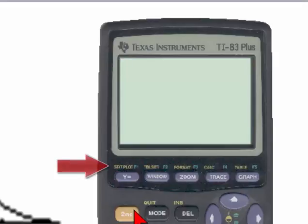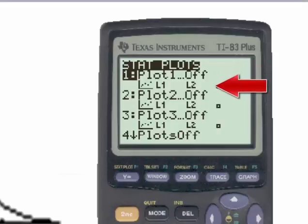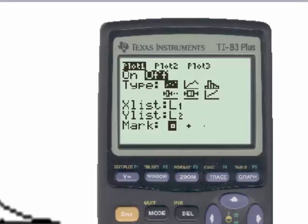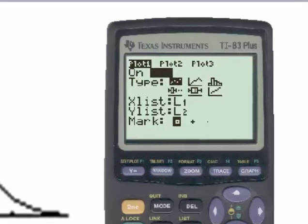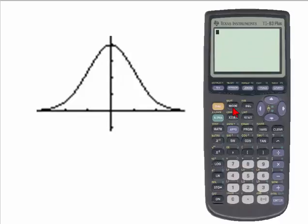First, we'll go to the stat plot menu, which is just over the y equal to in yellow, and be sure that all of the plots 1, 2, and 3 are turned off. To turn off the plot, simply go to the plot by using the Enter key, move the cursor to the off position, and then select Enter. And now that plot is turned off. To go back to the home screen, use the second quit command.